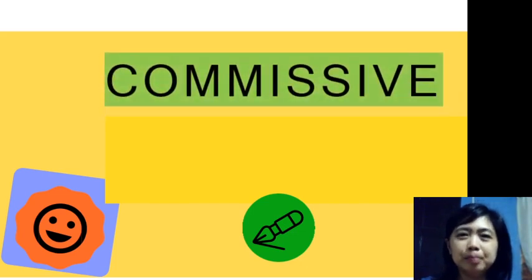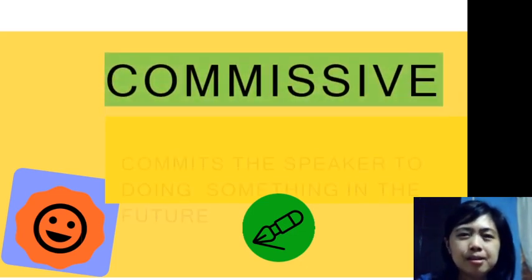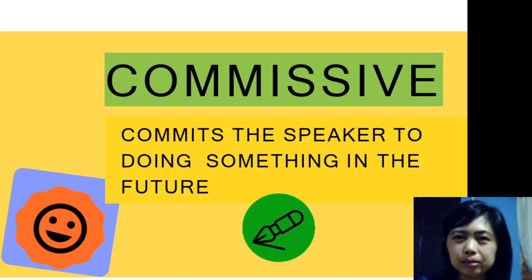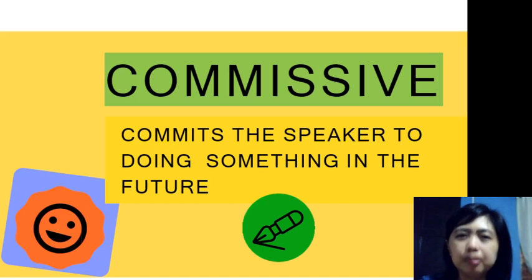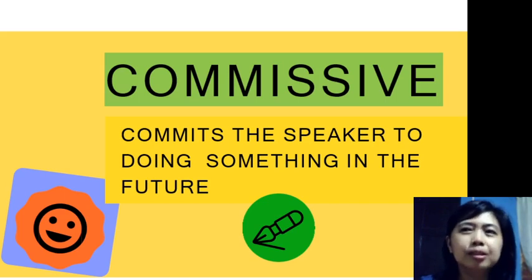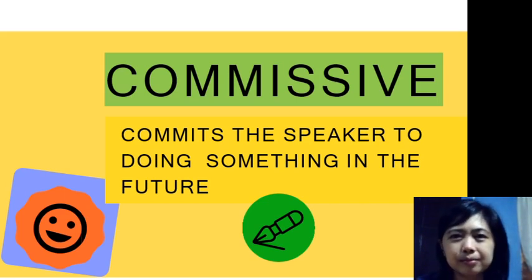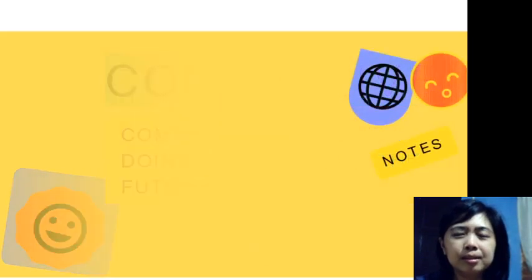Next on illocutionary speech acts, we have commissive. Commissive is an illocutionary speech act in which the speaker commits to doing something in the future. Commissive has something to do with commitment — you commit to someone that you will do something. For example: 'I promise to love you now and forever.'